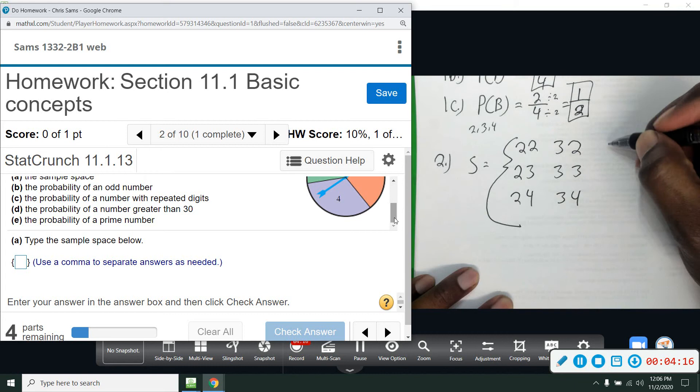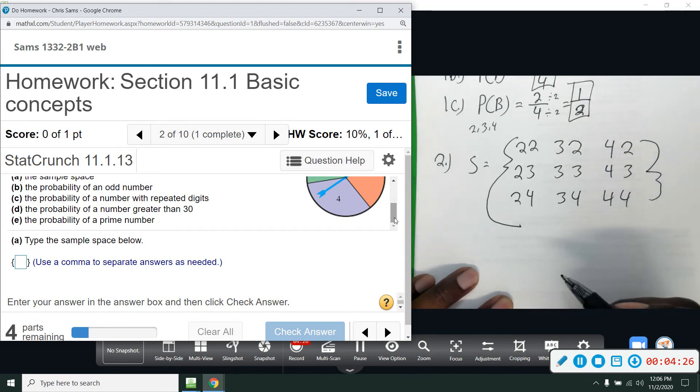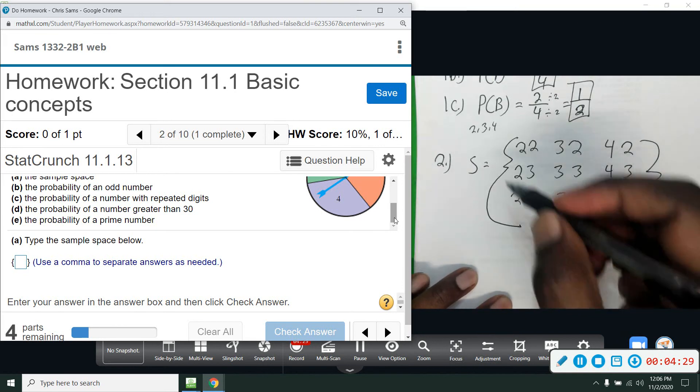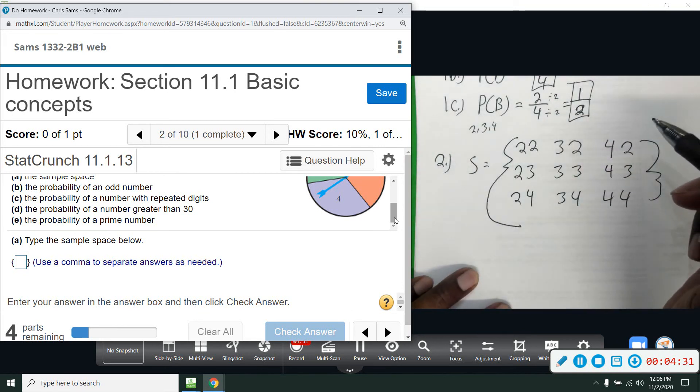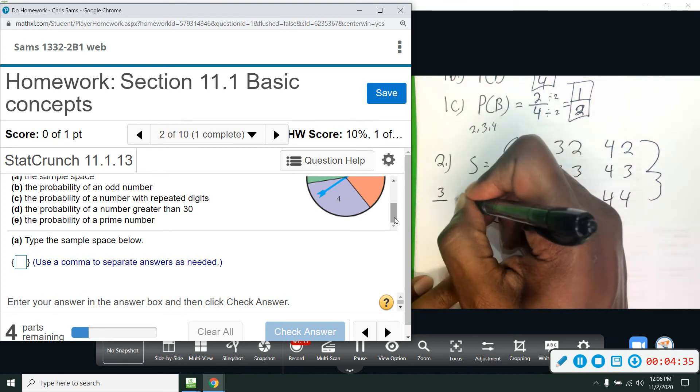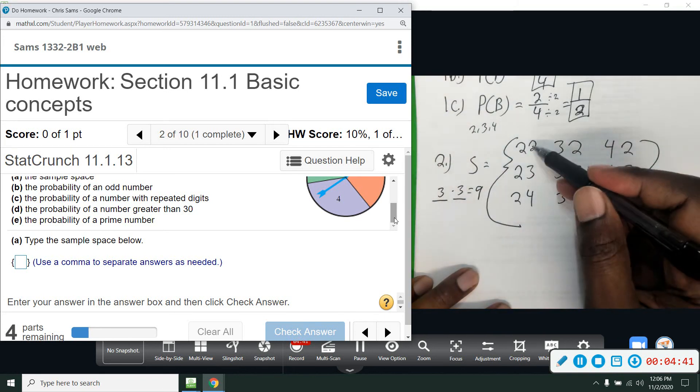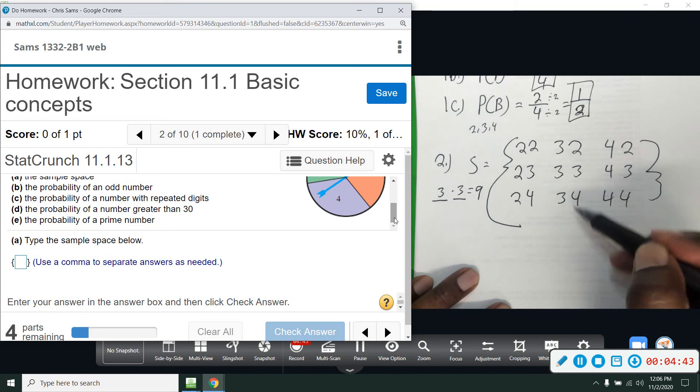So now we have 4 and a 2, 4 and 3, 4 and 4. And this will give us our sample space. So remember that counting principle that we did in Chapter 10? We have three numbers for the first spin and we can repeat, so we have three numbers for the second spin. 3 times 3 gives us 9. And if you count these - 1, 2, 3, 4, 5, 6, 7, 8, 9 - we have nine two-digit numbers.